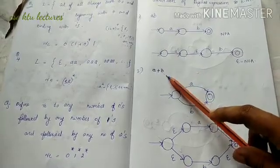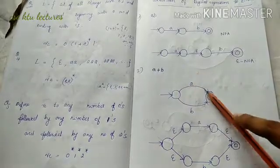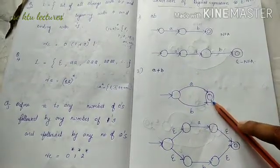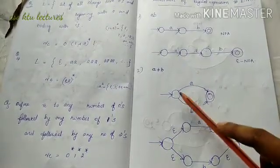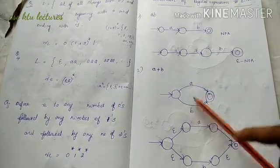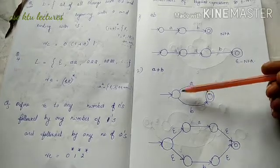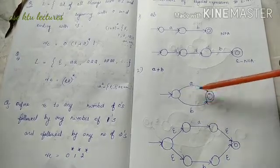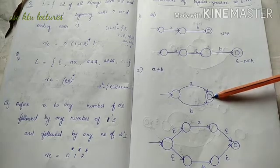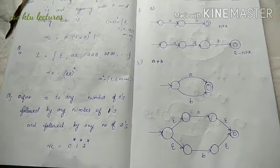A+B means A or B — either A or B. We have to write an NFA with states for A and B. Either path reaches the final state. In each case, this is the NFA — the Epsilon-NFA for A+B.